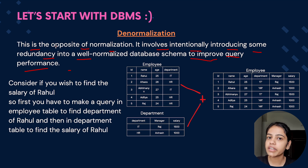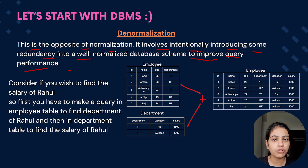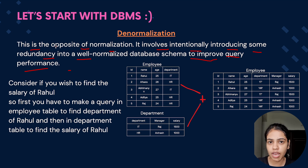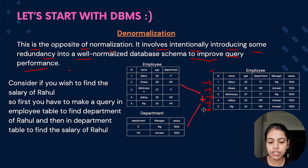Consider that there is a table of employee which has employee ID, employee name, employee age, as well as department details such as department name, department ID, and department salary. In this particular table we used to encounter some data redundancy or duplicacy because of rows as well as columns. Row-level duplicacy was addressed by introducing the concept of primary key — we used to make an attribute such as ID as primary key, so there couldn't be any null or duplicate values in the ID column. So row-level duplicacy was reduced.